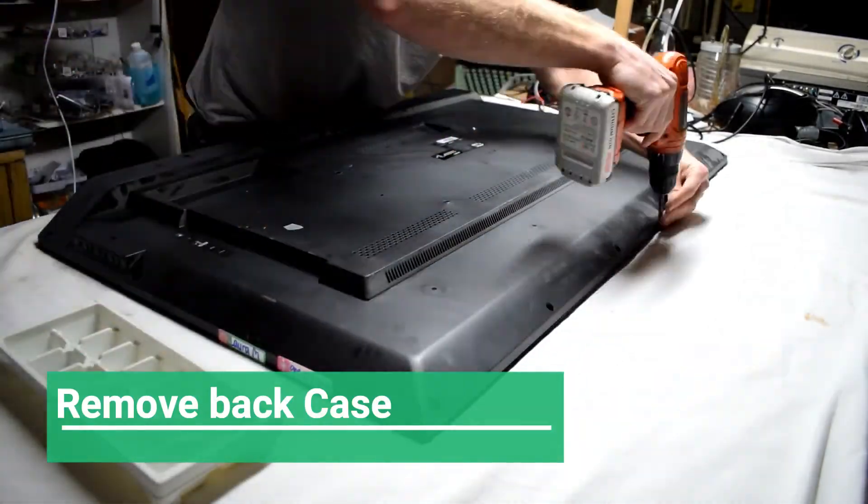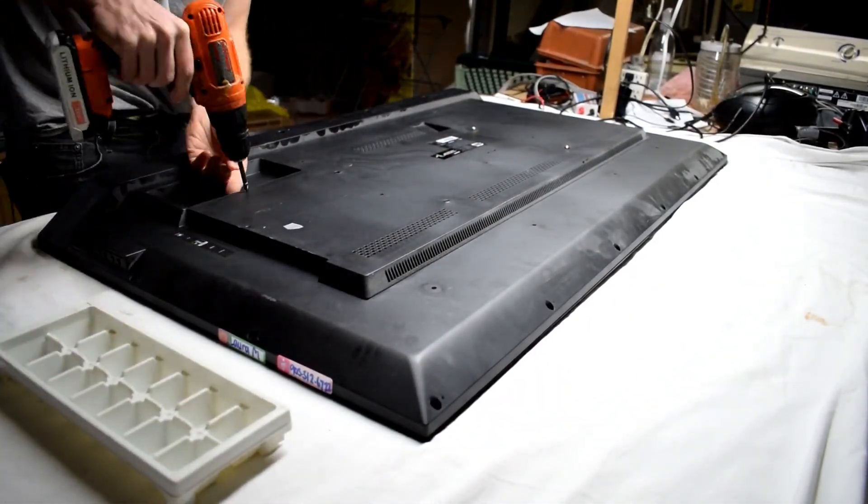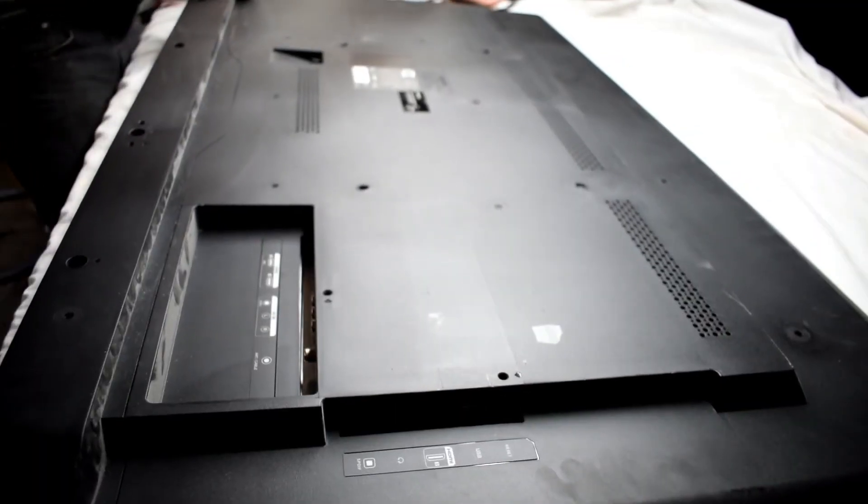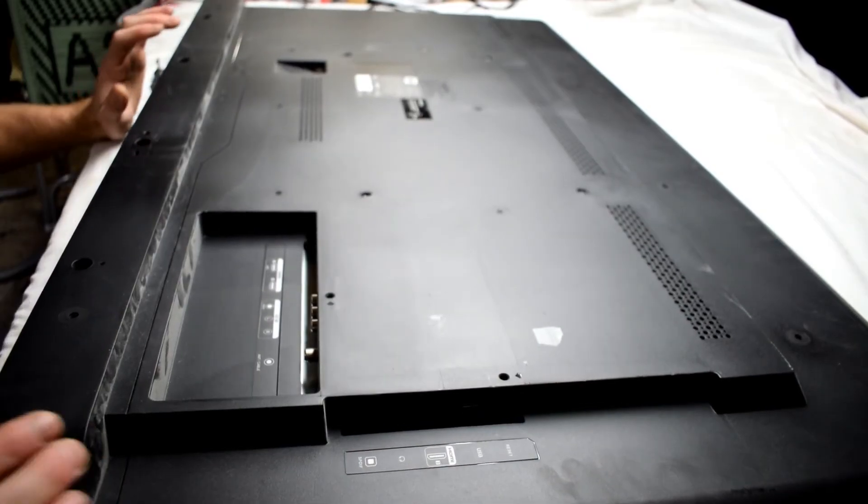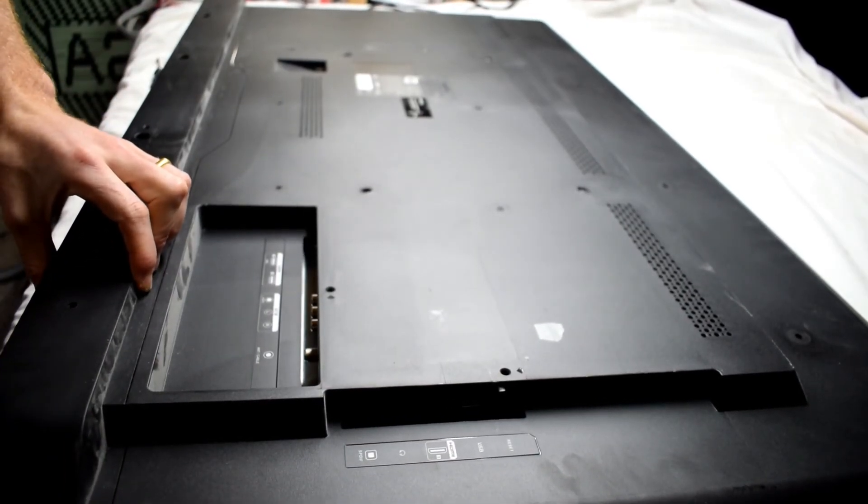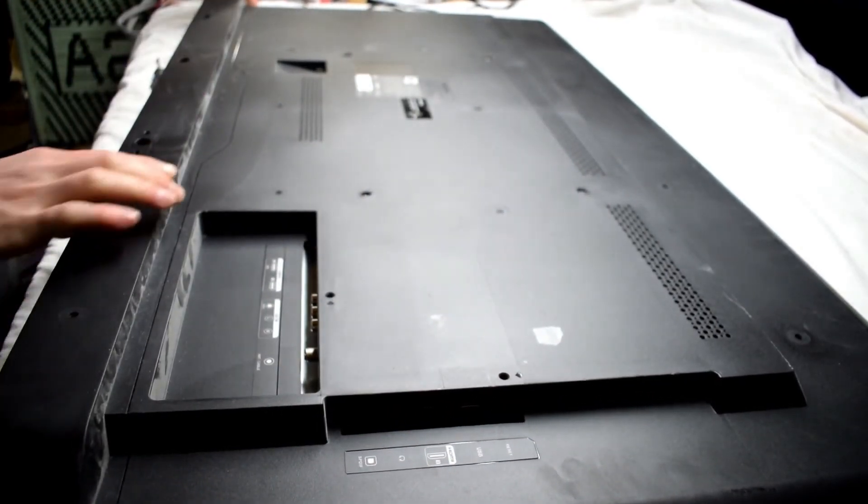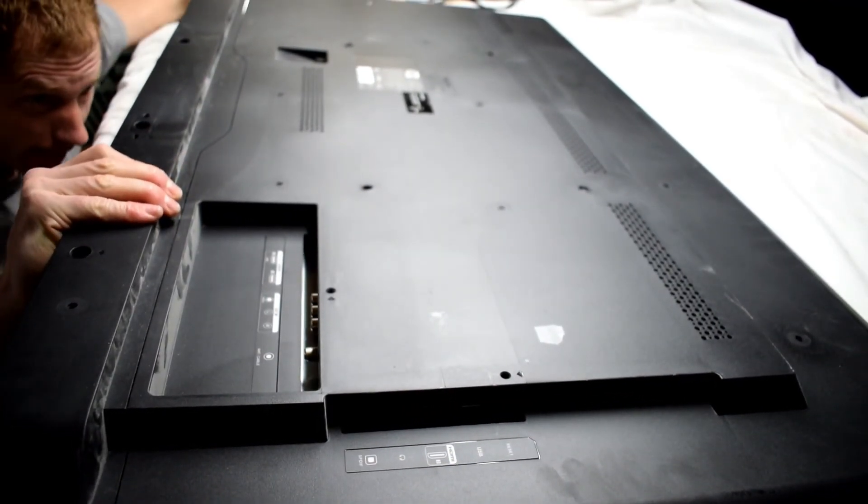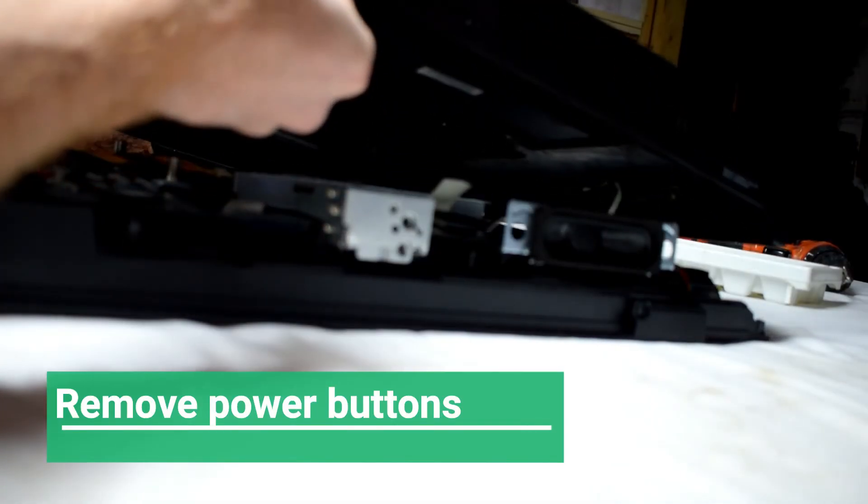The first thing that you want to do is to remove the back case. As you're lifting up the case, be careful because there's wires that connect to the power button at the right-hand side. Just lift up gently and then you'll be able to see it.